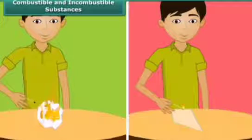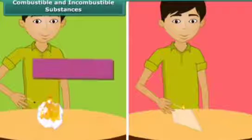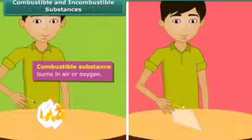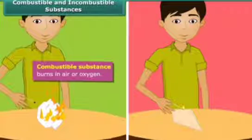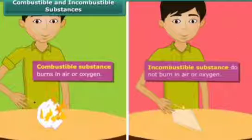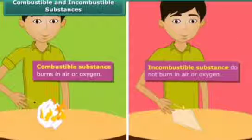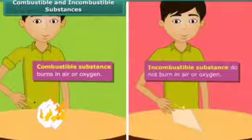Paper catches fire and so it is called combustible substance. The glass does not burn and such substances which cannot burn in air or oxygen are incombustible substances.